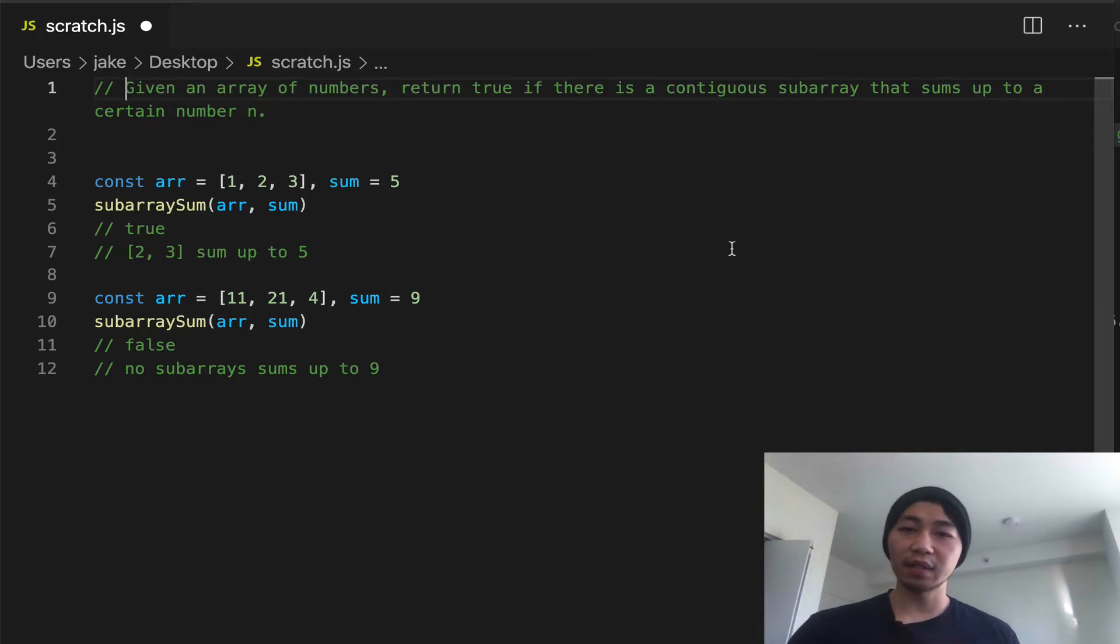Given an array of numbers, return true if there is a contiguous subarray that sums up to a certain number n. So we have two examples in front of us. The first, we have an array 1, 2, 3, and a target sum of 5. And if we were to run this input through the subarray sum function, we would get true.